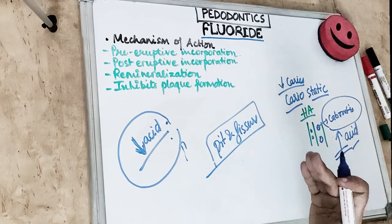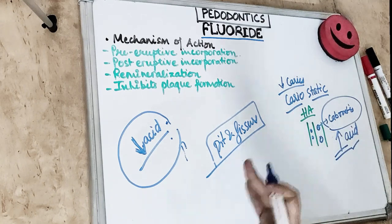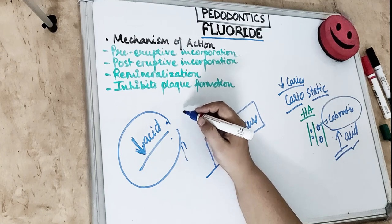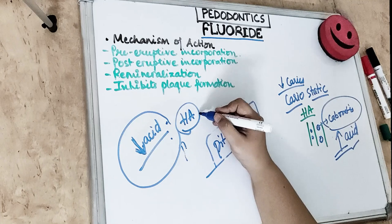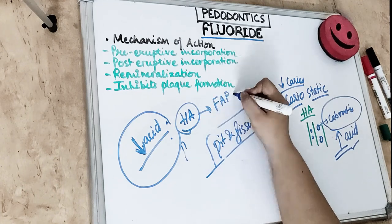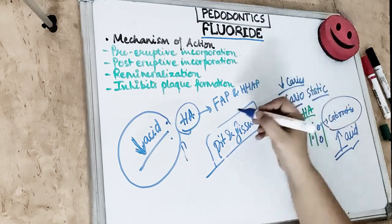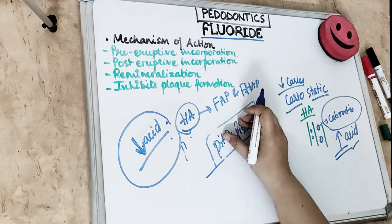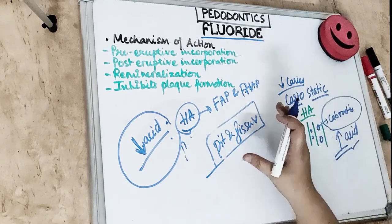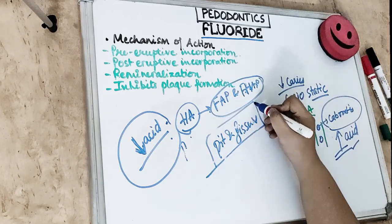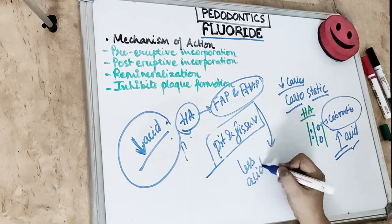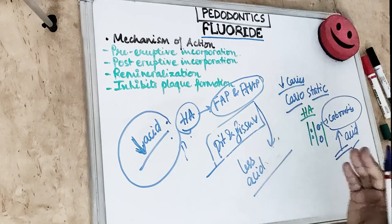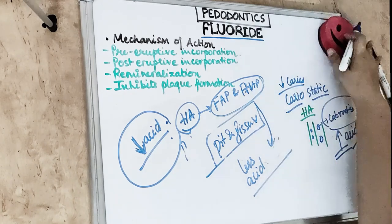In post-eruptive incorporation, fluoride continues to enter the enamel surface and changes its structure. The hydroxyapatite crystals present in the enamel are converted to fluorapatite and fluorohydroxyapatite. These fluoride-rich crystals are less acid soluble, meaning that when bacteria release acid, the enamel crystals are not dissolved as readily.